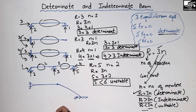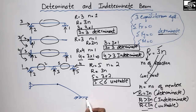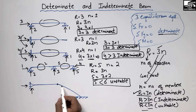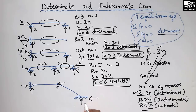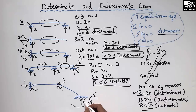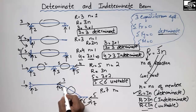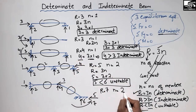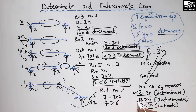The last beam has a hinge support, an internal hinge, and a fixed support. The hinge support provides vertical and horizontal reactions; the internal hinge can resist vertical and horizontal force; and the fixed support resists vertical, horizontal, and moment — giving reactions 1, 2, 3, 4, 5, 6, and 7. So R = 7. There are two members, N = 2. Plugging in: 7 versus 3 × 2 = 6. Since 7 > 6, R > 3N, this beam is also indeterminate.